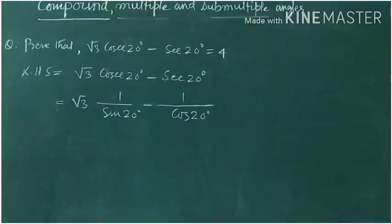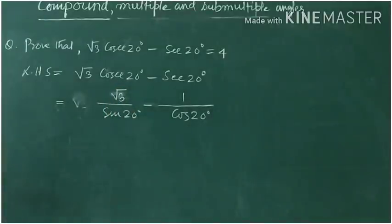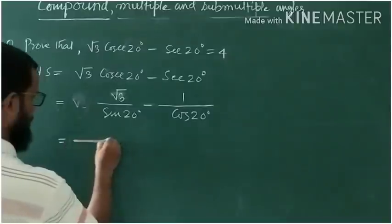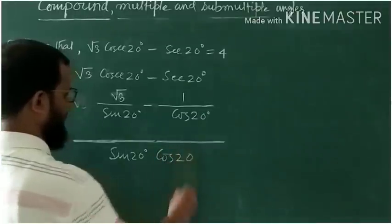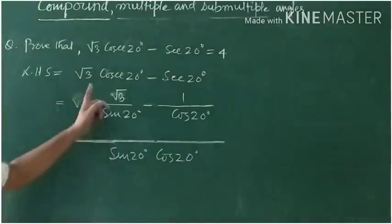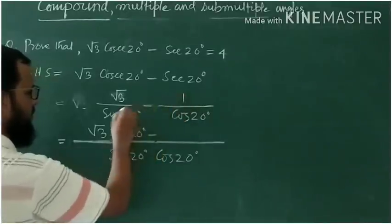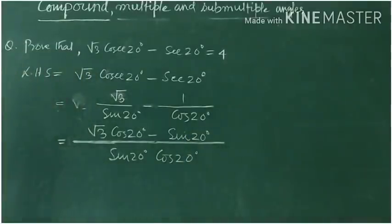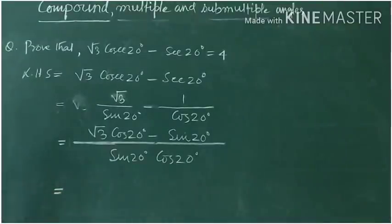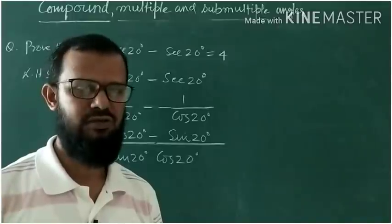Take the left-hand side: √3·cosec(20°) − sec(20°). Converting into sine and cosine — we know cosecθ = 1/sinθ and secθ = 1/cosθ — so this becomes √3/sin(20°) − 1/cos(20°). Now take LCM, which is sin(20°)·cos(20°). After taking LCM, the numerator becomes √3·cos(20°) − sin(20°).